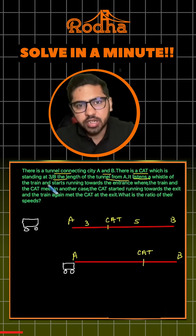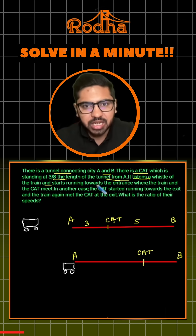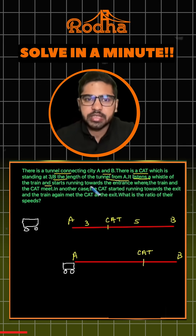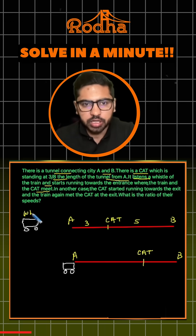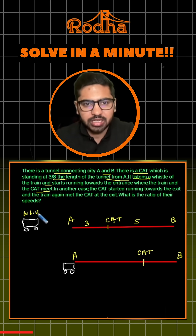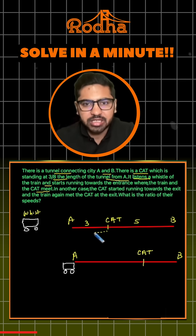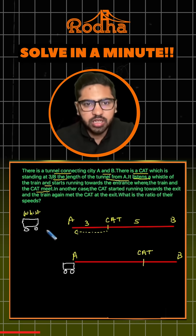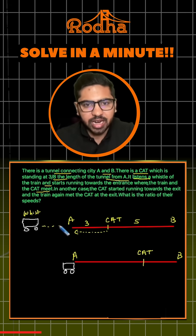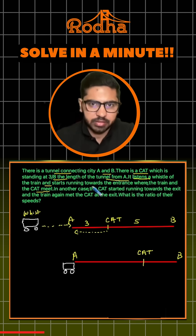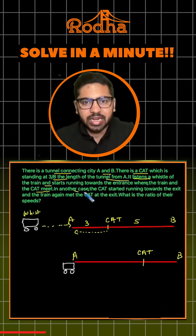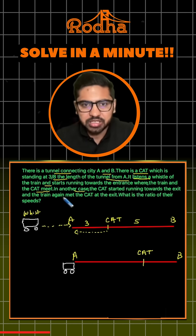The cat listens to the whistle of a train and starts running towards the entrance, where the train and the cat meet at the entrance of the tunnel. In another case, the cat starts running towards the exit and the train again meets the cat at the exit.